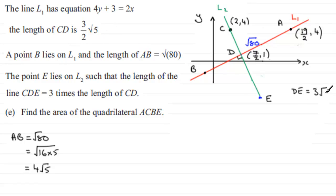Now we've got to find the area of the quadrilateral ACBE. So let's just join that up. We've got A to C, which is a horizontal line, C to B, and then B to E, and then E back to A. So if we're finding the area of this quadrilateral, what I notice is that I've got two triangles.